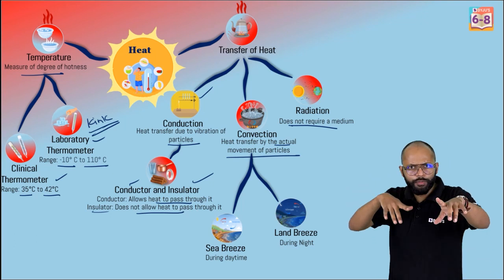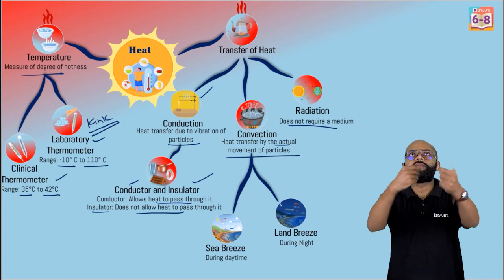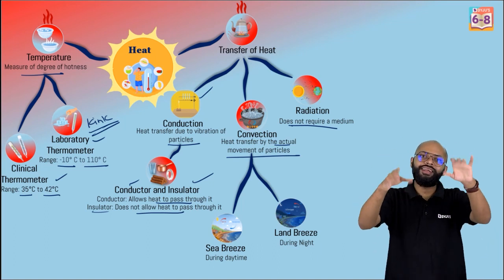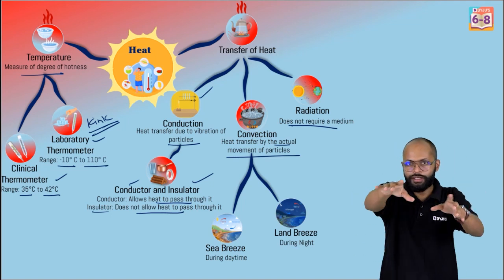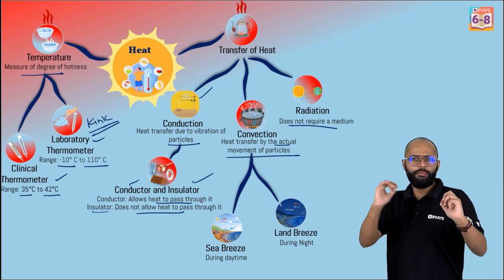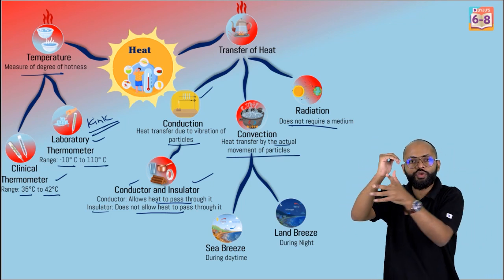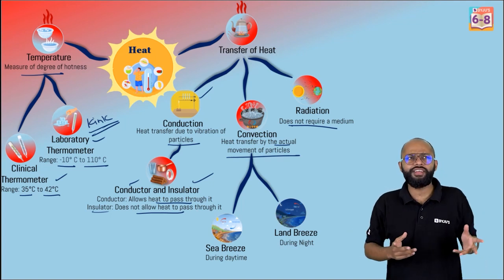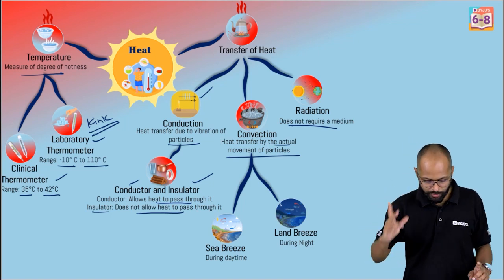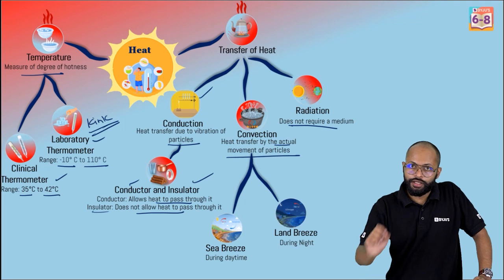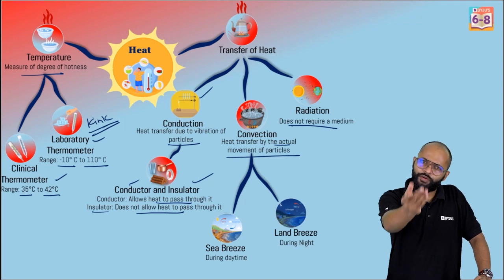The opposite happens at night — this is the land breeze. At night, land cools down faster because whatever gains heat more quickly also loses heat more quickly through radiation. The sea takes time to gain heat and takes time to lose heat. So at night, land is cooler and sea is warmer. Air above the sea rises, and cold air from the land goes towards the sea. That's why coastal areas always experience sea breeze and land breeze.